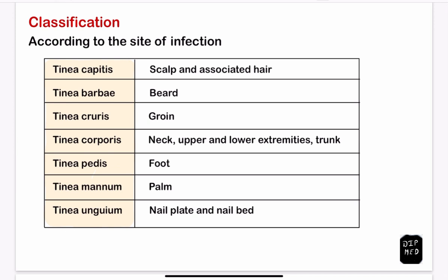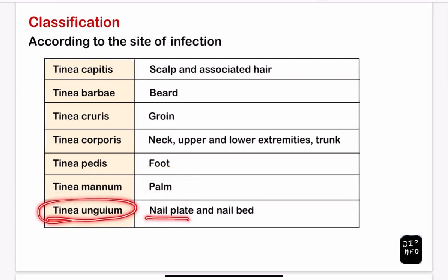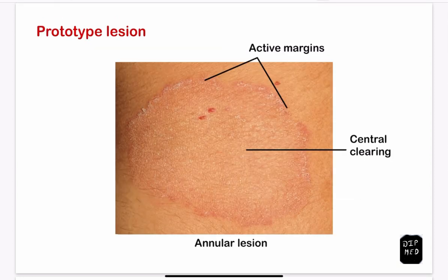Classification of dermatophytosis can be done according to the site of infection. Tinea capitis is dermatophytosis of the scalp and associated hair. Tinea barbae is infection of the beard region. Tinea cruris affects the groin area. Tinea corporis is infection of the neck, upper and lower extremities, and trunk. Tinea pedis is infection of the foot. Tinea manum affects the palm areas, and tinea unguium affects the nail plate and nail bed.